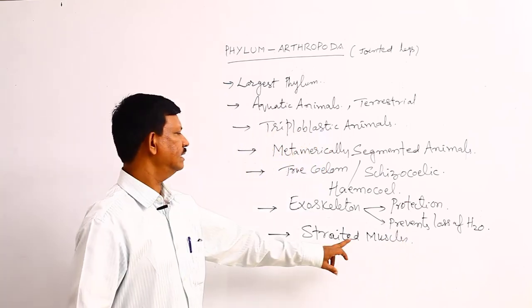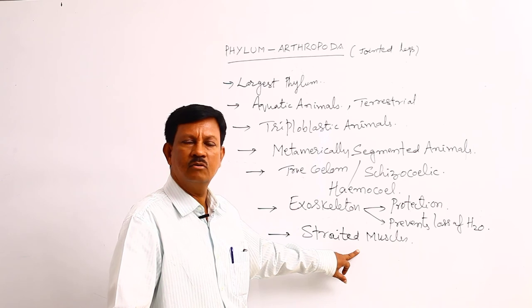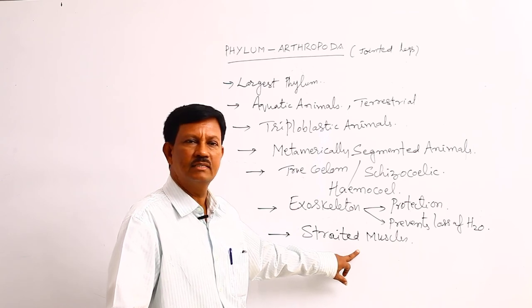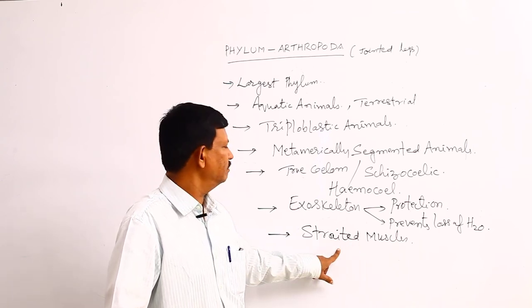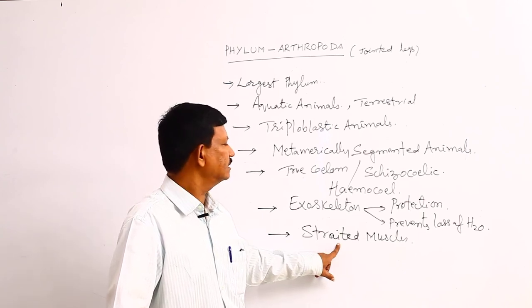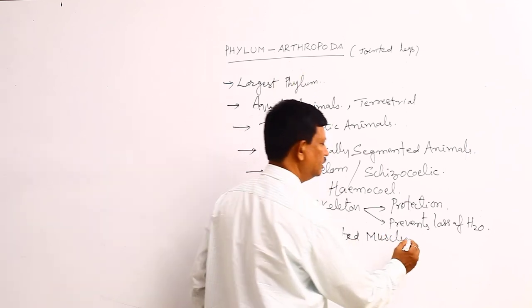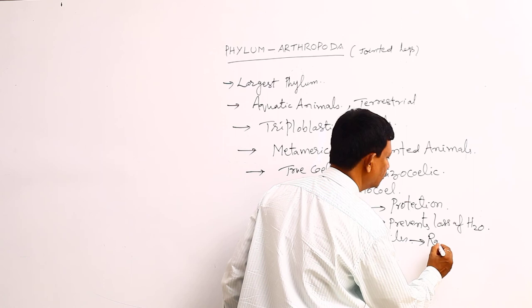Muscles are already present in the Phylum Aynelida - they are circular muscles and longitudinal muscles. But here is a special type of muscle which is present in higher animals like vertebrates. Striated muscles are first time developed in this phylum. They are useful for rapid locomotion due to the presence of striated muscles in the body.